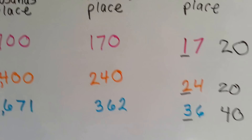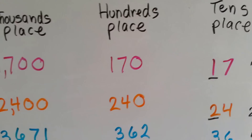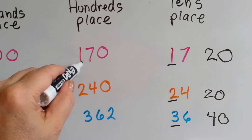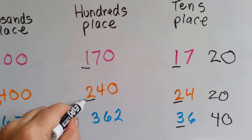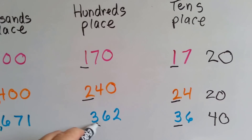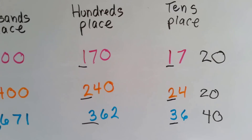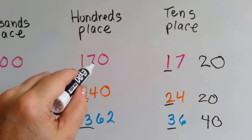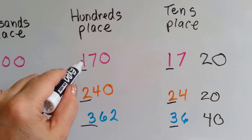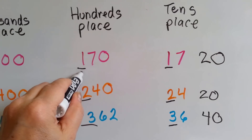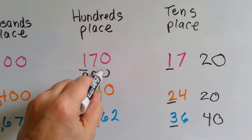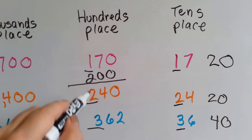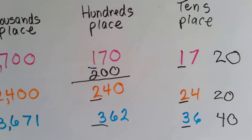Let's try hundreds place. 7 is the number to the right. If we're rounding to the hundreds place, the 7 is going to tell the 1 to go up to 2, isn't it? It finishes its job and it's done. 170 rounds to 200 if you're rounding in the hundreds place.